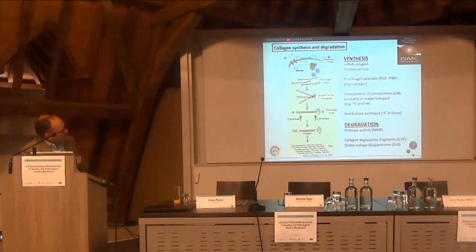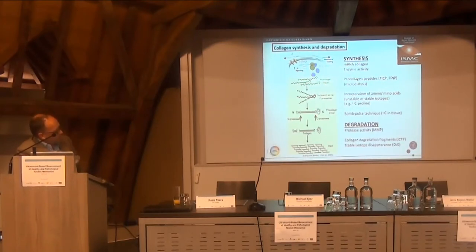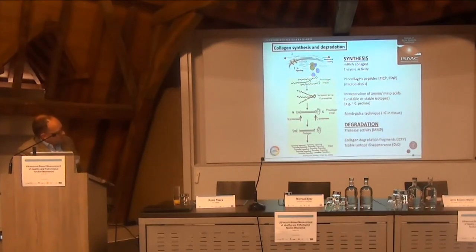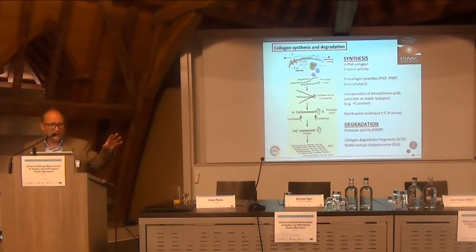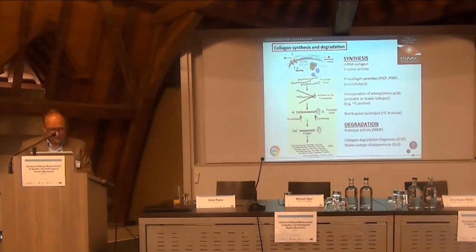To determine whether new collagen is produced by cells, you can use different methods: indirect methods measuring enzymes along the production pathway, measuring cleavage products, or infusing stable isotopes. If you infuse a labeled amino acid like proline and new collagen is made, it gets incorporated. By taking a tissue biopsy and detecting the stable isotope — C13 or N15 — you know something has been incorporated, indicating new production. But the debate is out there: is tendon a dynamic structure or not?